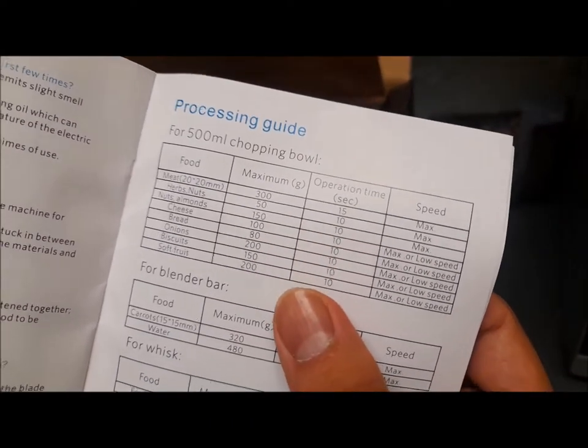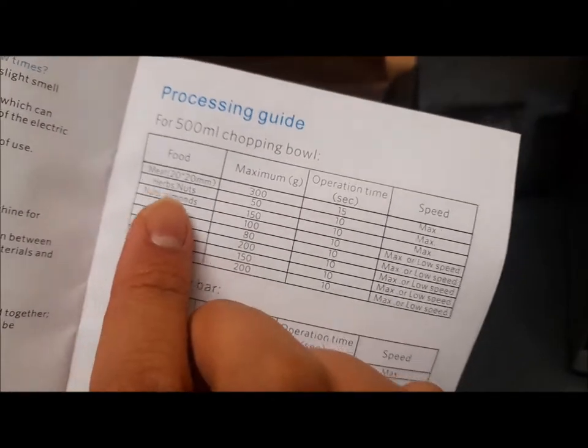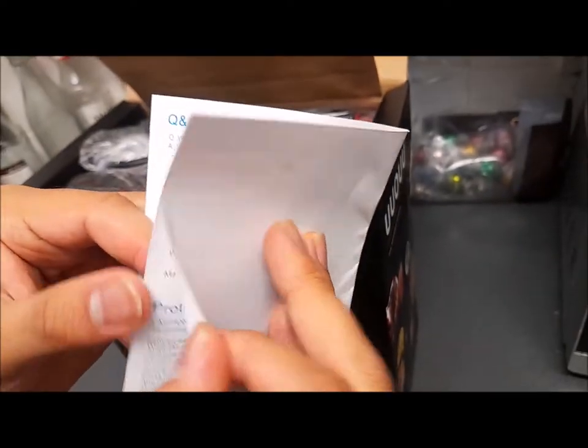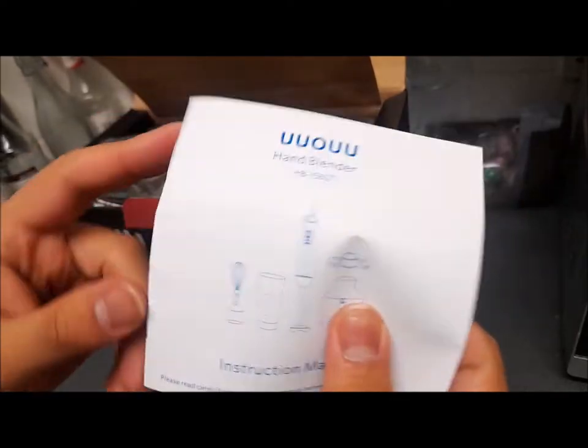There's a processing guide here with meat, herbs, nuts, almonds, cheese, bread, all of that. If it's got meat, how are you supposed to chop it for one minute only? Anyway, you've got all of this stuff right there. So whenever you buy it, you should read through before you use it.